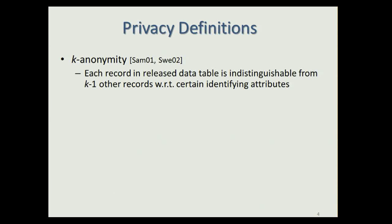These sorts of attacks have led to the proposal of many privacy definitions. One of the first is k-anonymity. K-anonymity is a privacy definition specifically for releasing data tables, and roughly speaking, it requires that each record in the released data table is indistinguishable from at least k minus one other records with respect to certain identifying attributes.